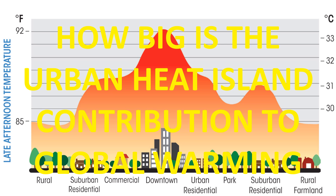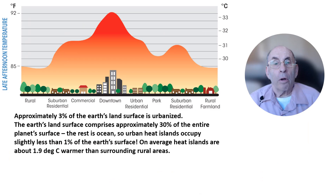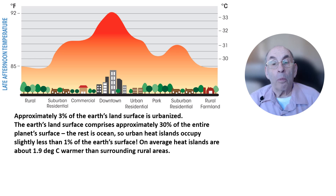The claim frequently is made that urban heat islands are making a major contribution to global warming. In this video, I will show that this claim is simply false. The term urban heat island was coined to illustrate the fact that the average daily temperature in urban areas is typically about 3.5 degrees Fahrenheit, or about 1.9 degrees centigrade, higher than in surrounding rural areas.